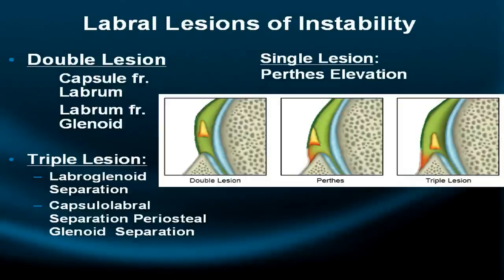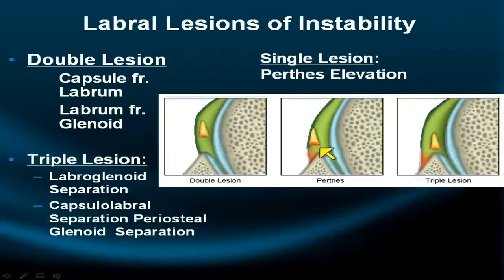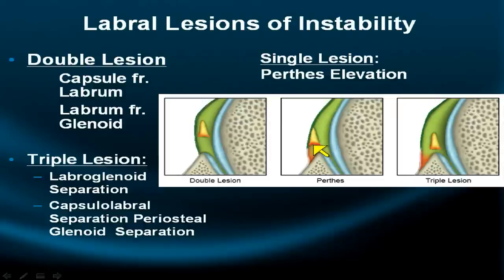Looking at Bankert equivalents: the Perthes lesion is where the labrum itself is intact but lifted away from the glenoid, forming a space or pouch. The periosteum swells and peels away from the scapula but is not broken, creating a closed space in which fluid, mucoid tissue, and blood may accumulate — the Perthes pouch. When this occurs posteriorly, it is called a reverse Perthes or Kim's lesion. These shoulders may or may not be unstable.